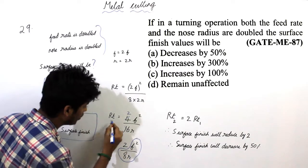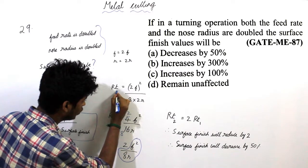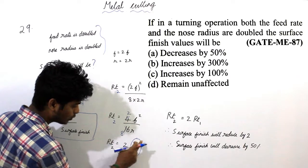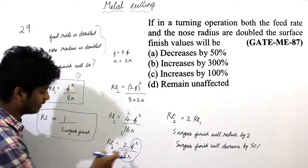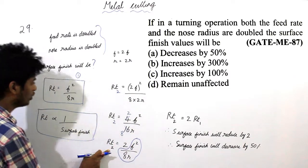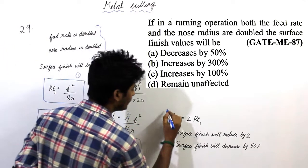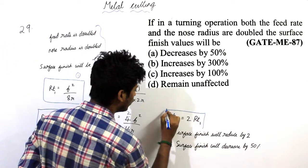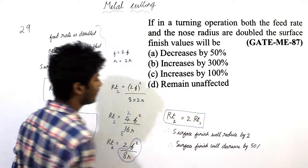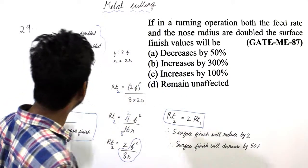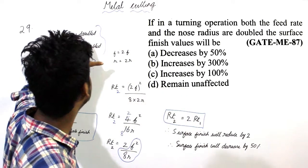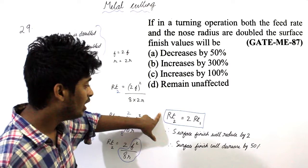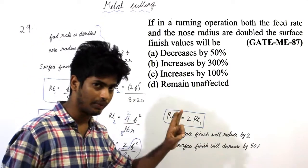2 into Rt2 equals 2f squared by 8r. This can be written as Rt2 equals 2 into Rt1. So when the feed rate as well as the nose radius is doubled, Rt value is increased by 2 times.